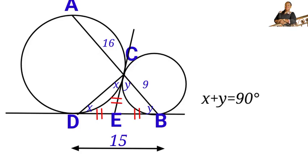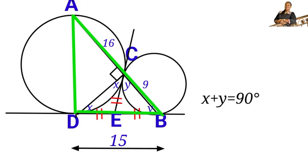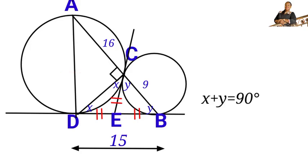We also know that angles on a straight line sum to 180°, so the angle on the other side of C is also 90°. Joining point A to point D, triangle ADB is a right-angle triangle. AD is the diameter of the bigger circle, because a diameter subtends a 90° angle at any point on the circle. The angle at D is also 90° because the diameter is always perpendicular to the tangent line.